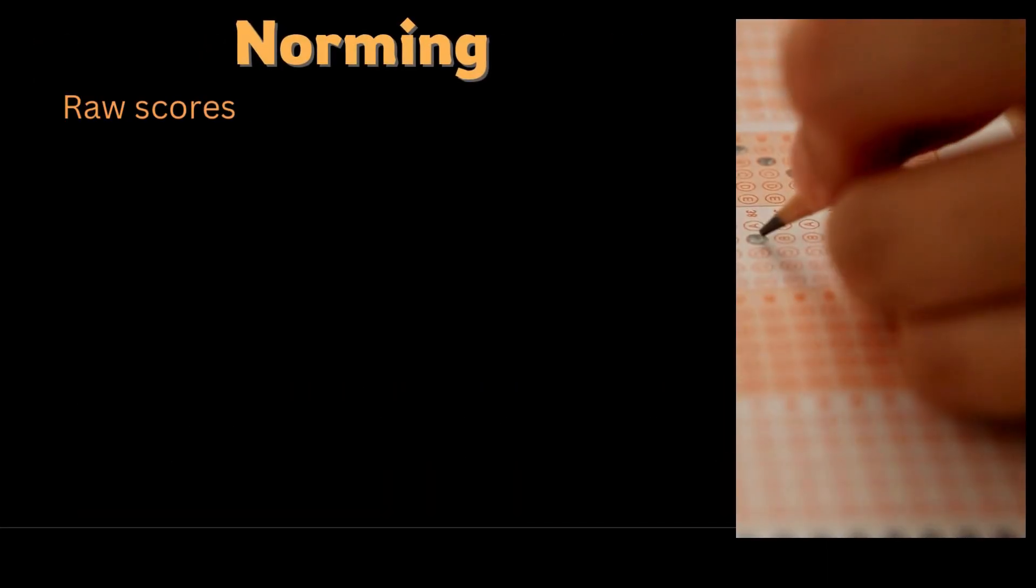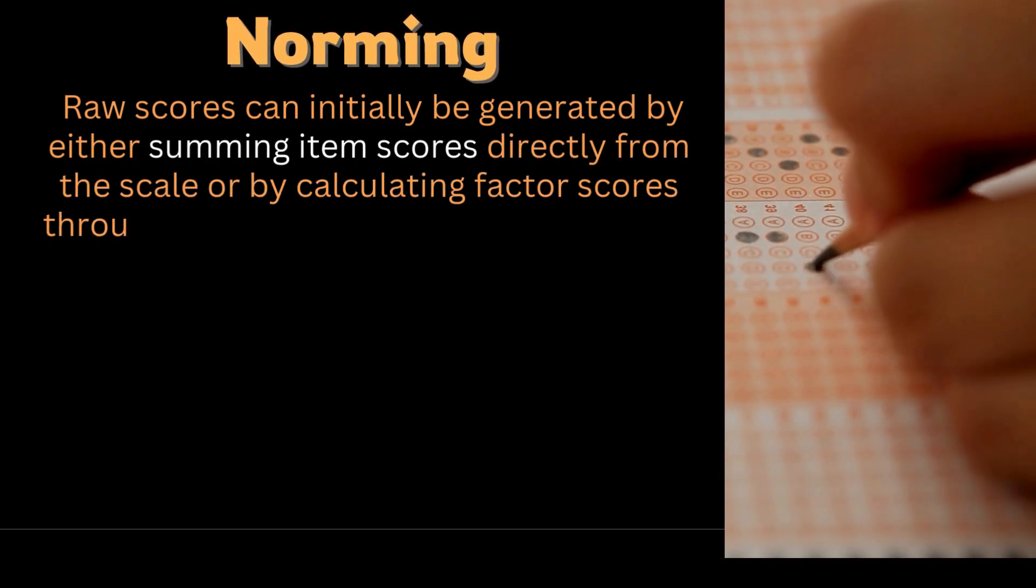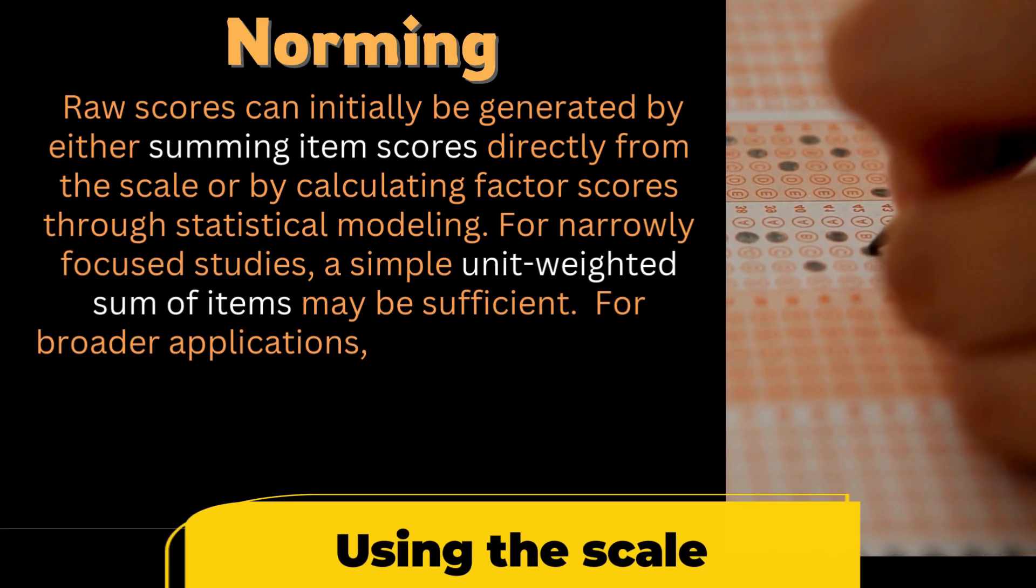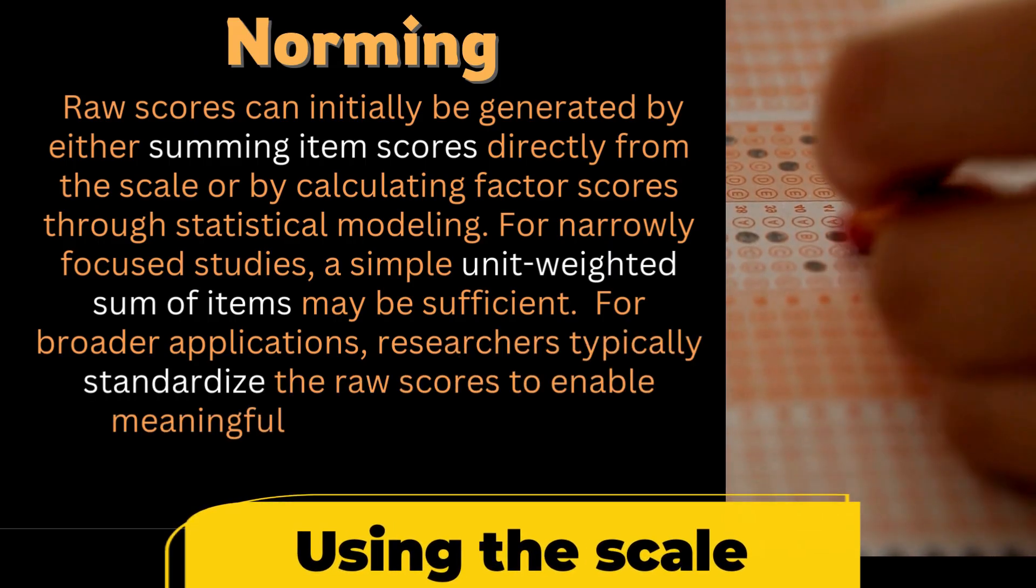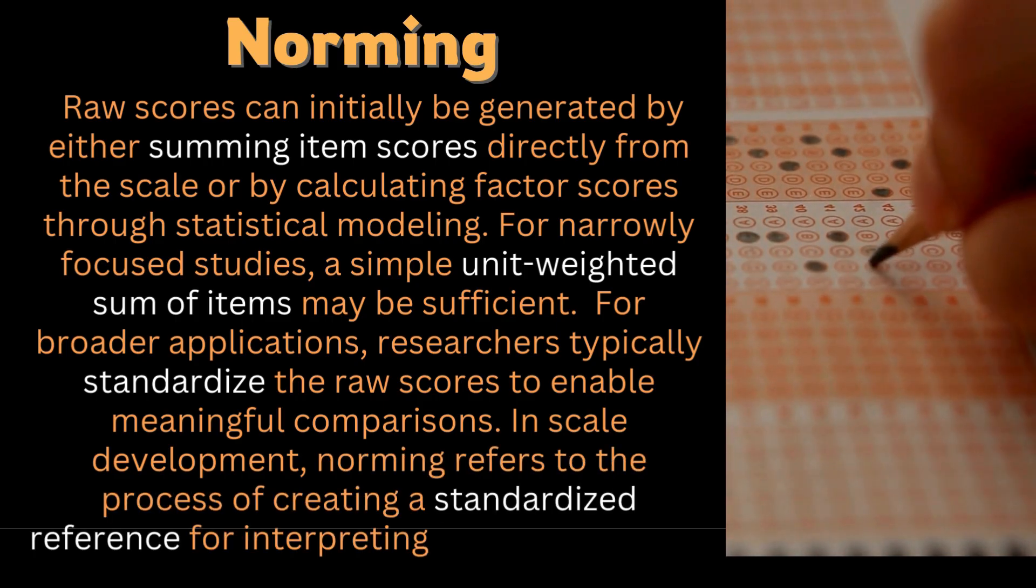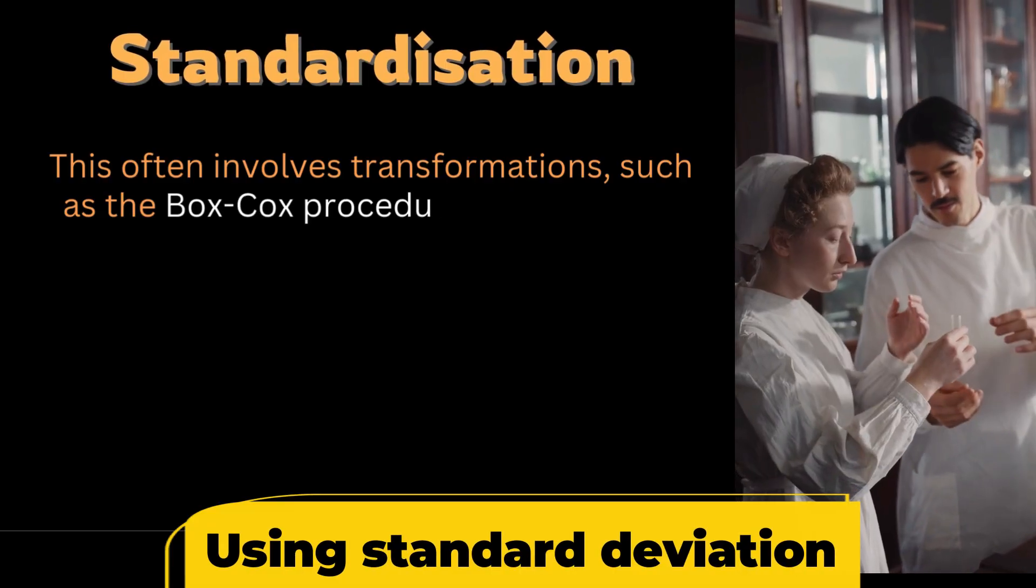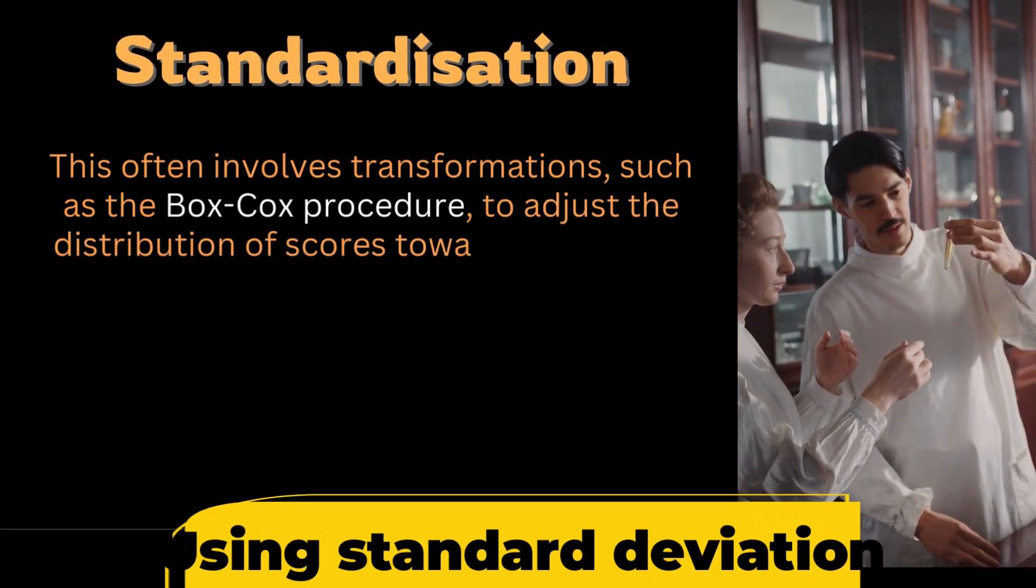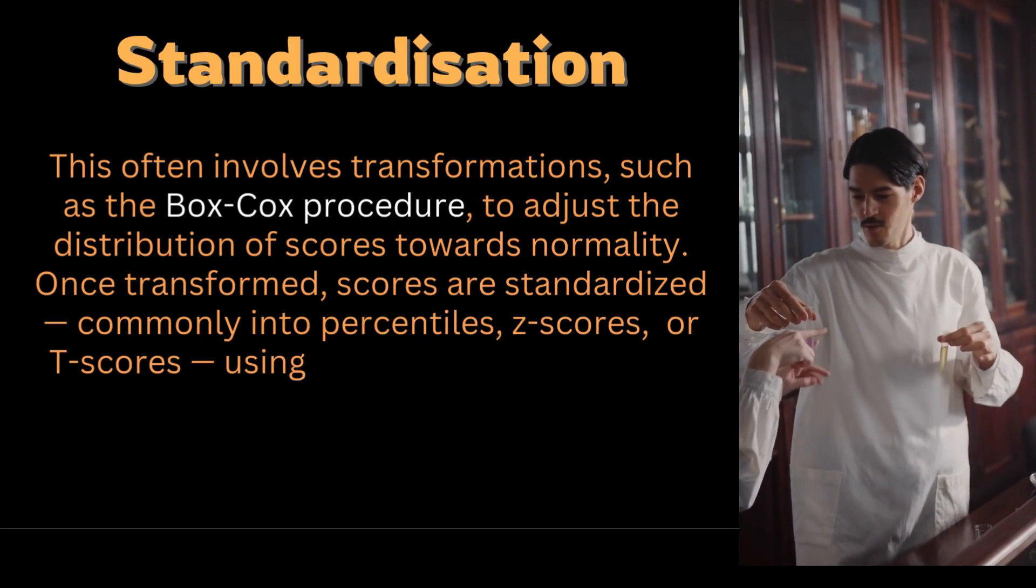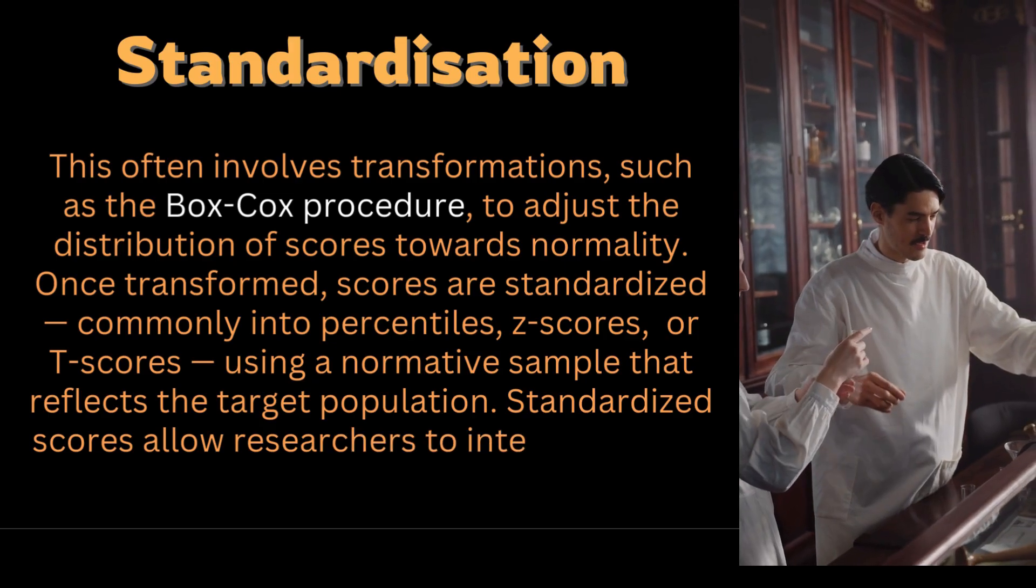Raw scores can initially be generated by either summing item scores directly from the scale or by calculating factor scores through statistical modeling. For narrowly focused studies, a simple unit weighted sum of items may be sufficient. For broader applications, researchers typically standardize the raw scores to enable meaningful comparisons. In scale development, norming refers to the process of creating a standardized reference for interpreting individual scores. This often involves transformation such as the Box-Cox procedure to adjust the distribution of scores towards normality. Once transformed, scores are standardized, commonly into percentiles, z-scores, or t-scores using a normative sample that reflects the target population. Standardized scores allow researchers to interpret where an individual stands relative to others.